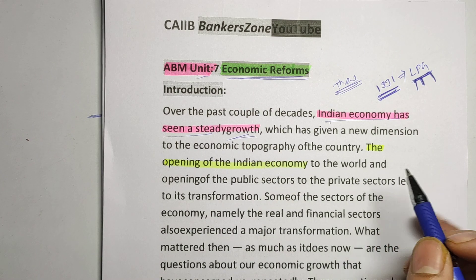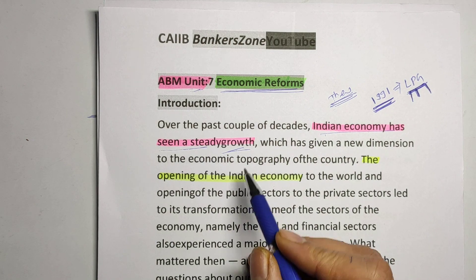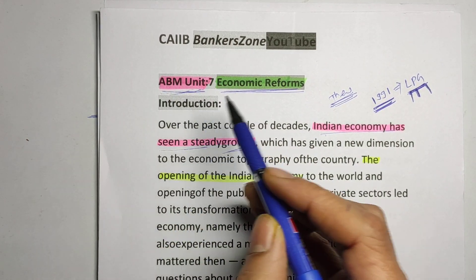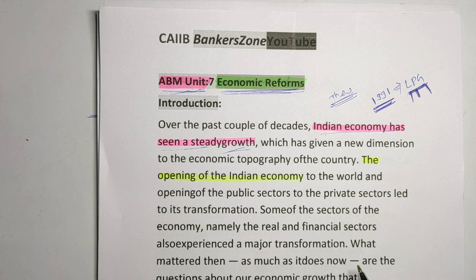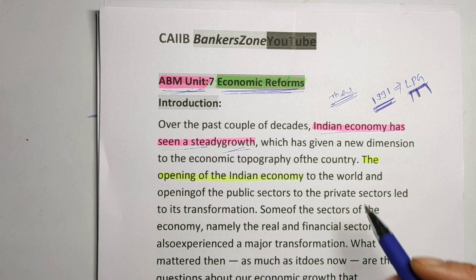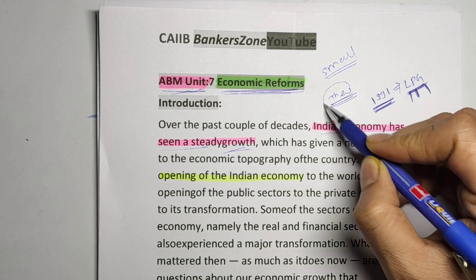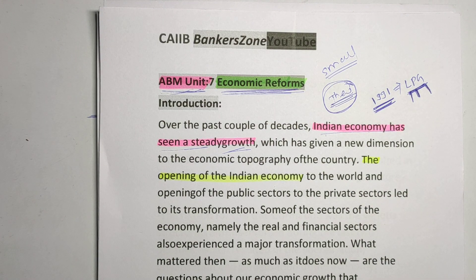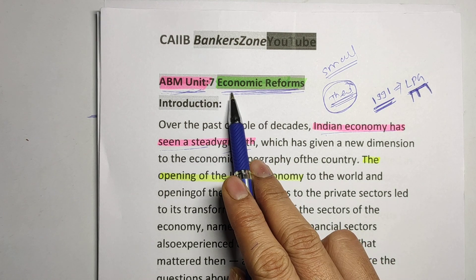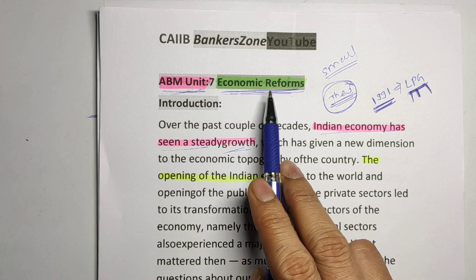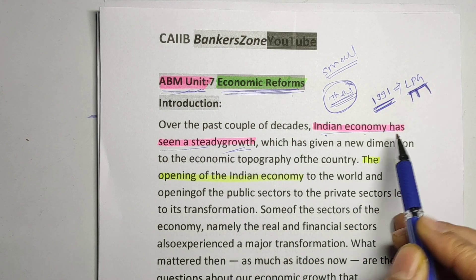Hello friends, in this video we are going to see ABM Unit 7, and the name of the unit is Economic Reform. This unit is only a small, completely theoretical unit. Let's see some introduction — we have to observe the economic reforms in the world, and mainly in India.